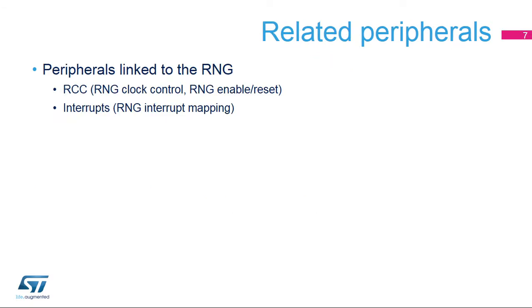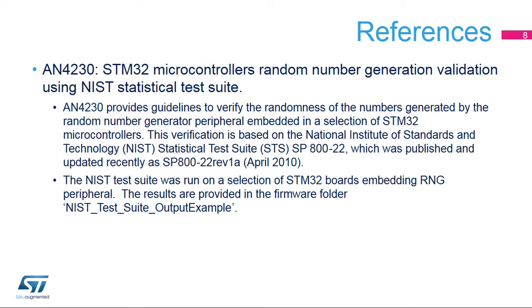This is a list of peripherals related to the random number generator. Please refer to these trainings for more information if needed. For more details, please refer to application note AN4230 about using the NIST statistical test suite to validate the random numbers generated by a selection of STM32 MCUs.